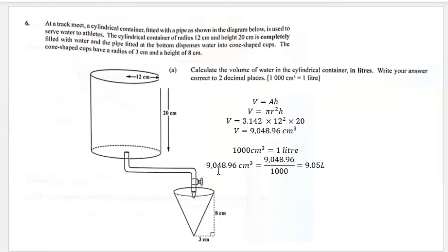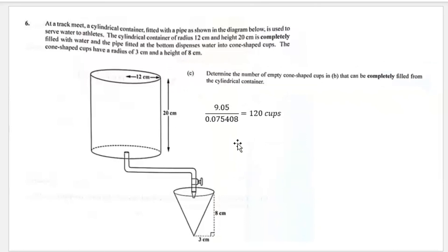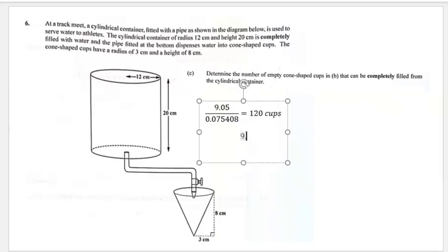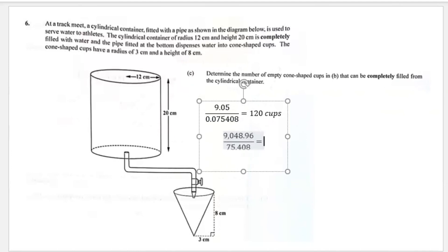Alternatively, using cm³: 9048.96 ÷ 75.408 also gives 120. No matter which unit you use, you get 120 — just ensure the units are the same. So 120 empty cone-shaped cups can be filled from the cylindrical container. Thank you for joining us and we'll see you in another video.